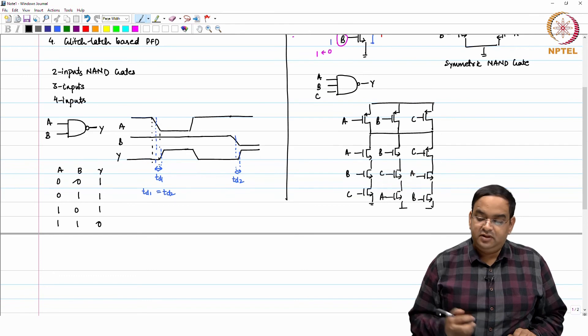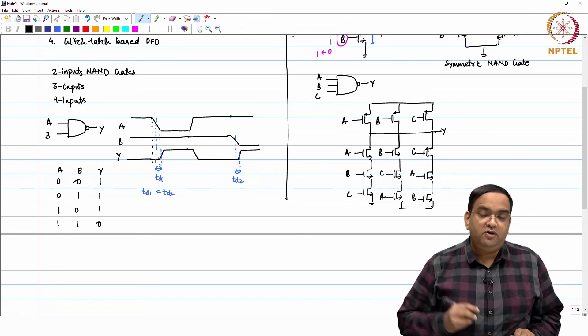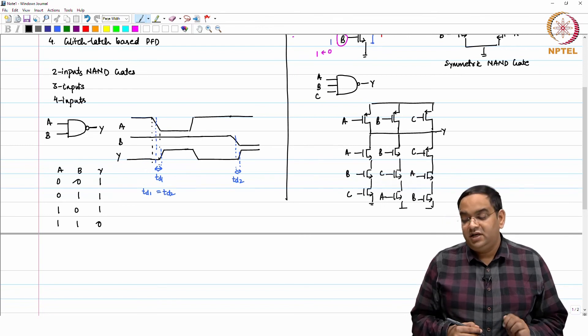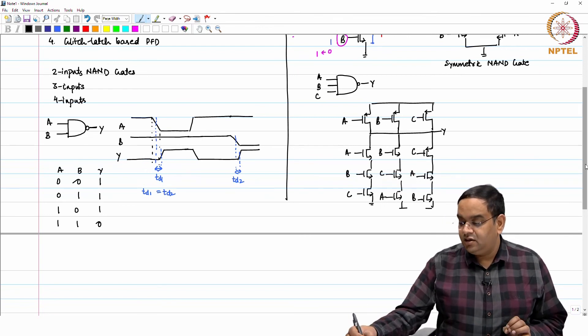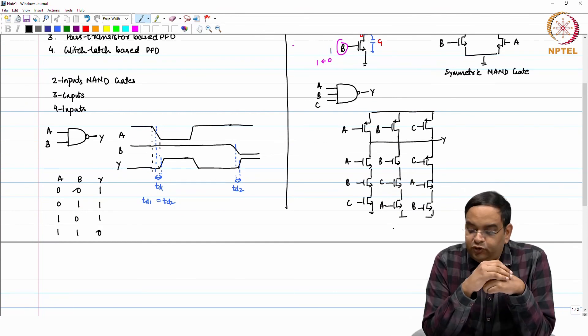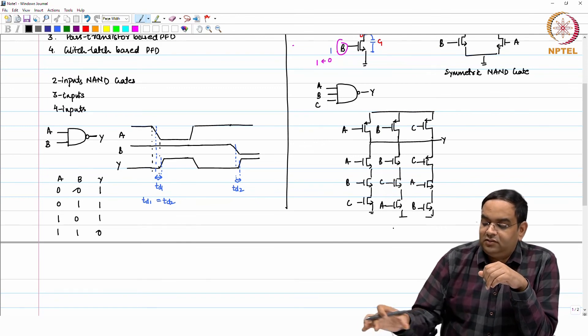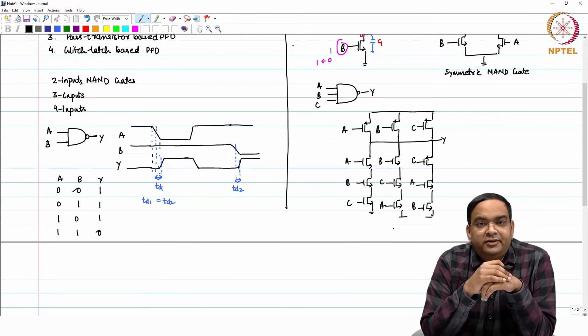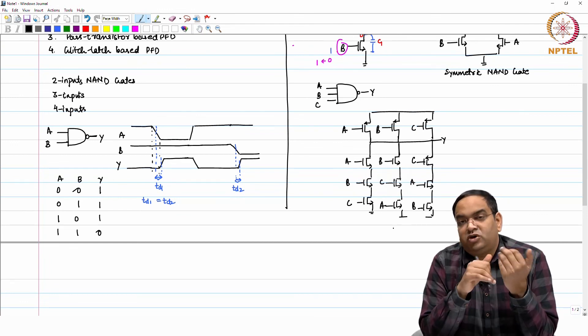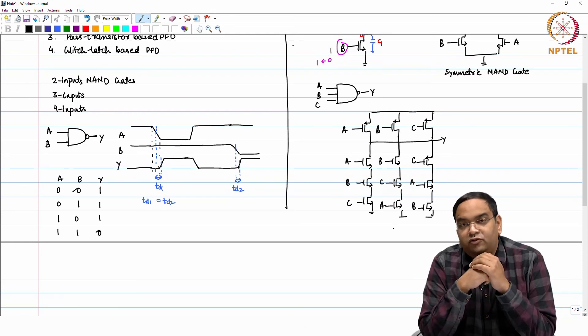Similarly, you can do for four input NAND gates. It is true that if we have these three locations and we would like to have all possible combinations, then you may use another three such branches, but that is going to increase the parasitics and this becomes more cumbersome when you start designing for four inputs.